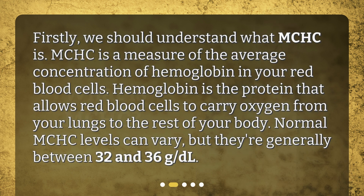What is MCHC? We should understand what MCHC is. MCHC is a measure of the average concentration of hemoglobin in your red blood cells. Hemoglobin is the protein that allows red blood cells to carry oxygen from your lungs to the rest of your body. Normal MCHC levels can vary, but they're generally between 32 and 36 grams per deciliter.